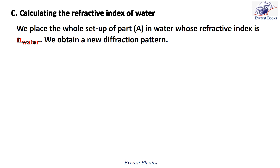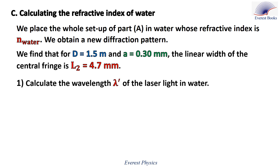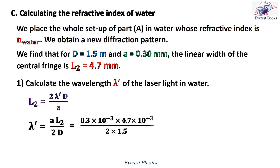Let's move to the third part, which is about calculating the refractive index of water. The whole setup of Part A is placed in water whose refractive index is n_water. For D equals 1.5 meters and A equals 0.30 millimeters, the linear width of the central fringe is 4.7 millimeters. Number one: calculate the wavelength lambda prime of the laser light in water. Using lambda prime equals A times L over 2D, plugging in the numbers gives a wavelength of 470 times 10⁻⁹ meters.